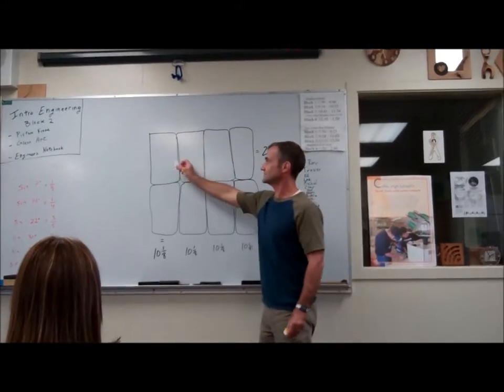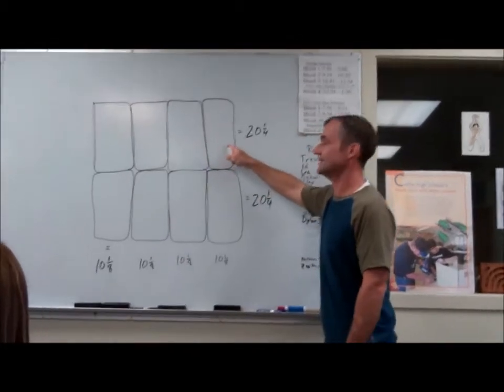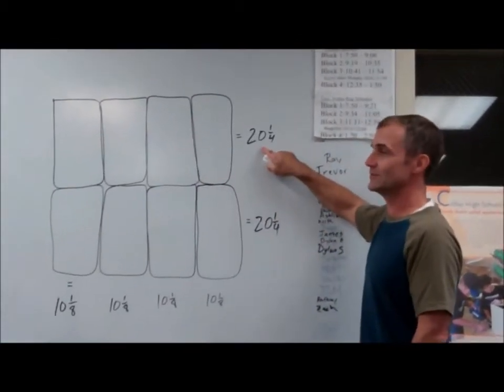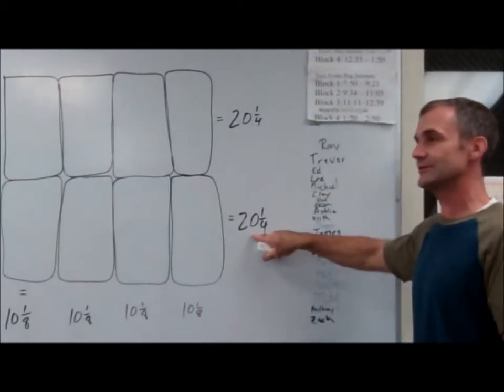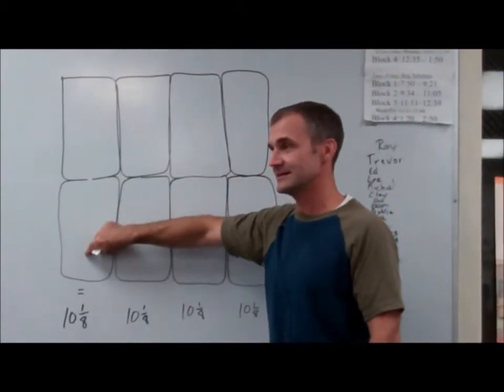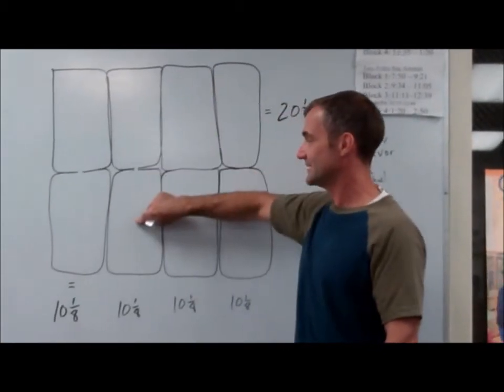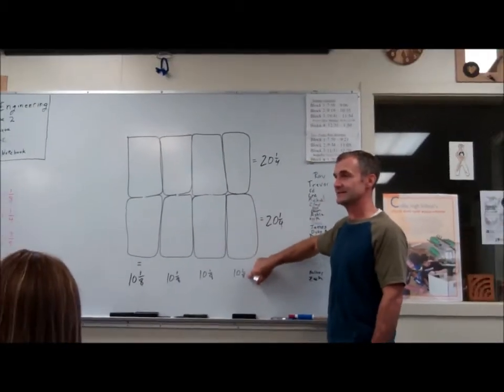You want to arrange those tiles in these eight spots so that this row right here adds up to 20 and a quarter. This row right here adds up to 20 and a quarter. This column adds up to 10 and an eighth, adds up to 10 and an eighth, adds up to 10 and an eighth, and this column adds up to 10 and an eighth.